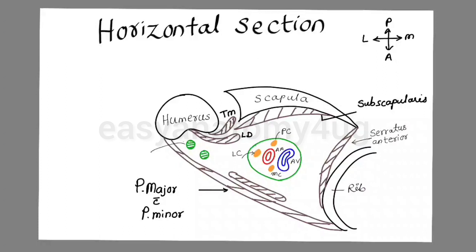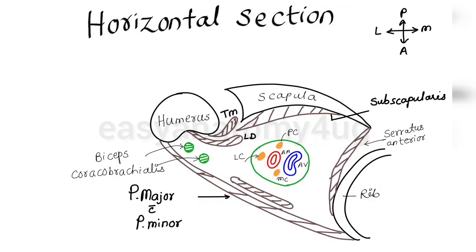So let us complete the labels. This is how we should draw the horizontal section step by step. The next important diagram is to show the contents of axilla: cords of the brachial plexus.